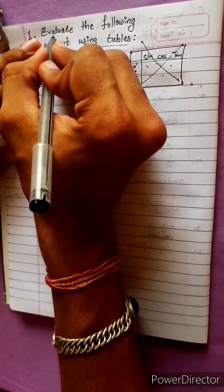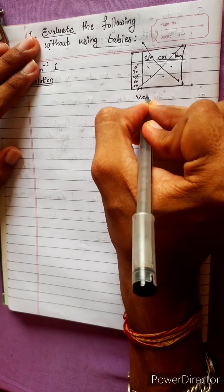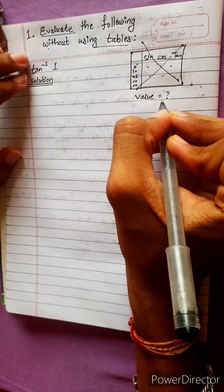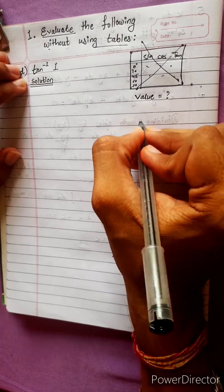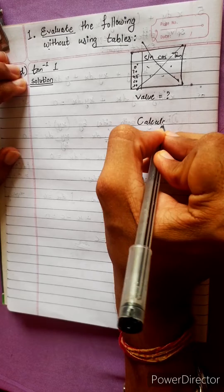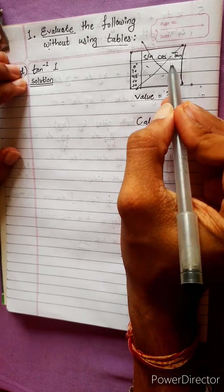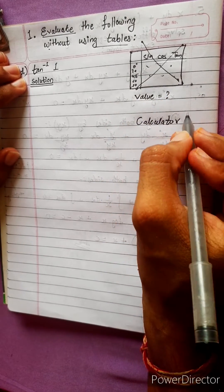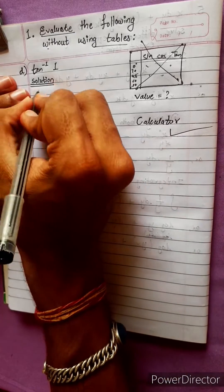What do we need to do? We need to find the value. How do we find it? The calculator uses the table, so we will be using a calculator to evaluate.